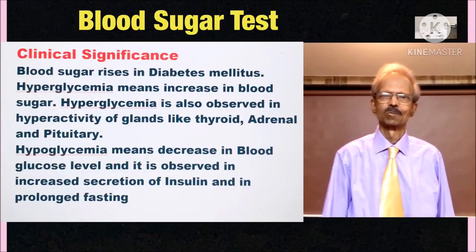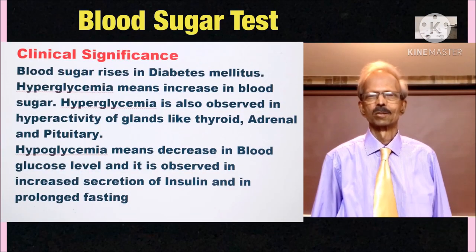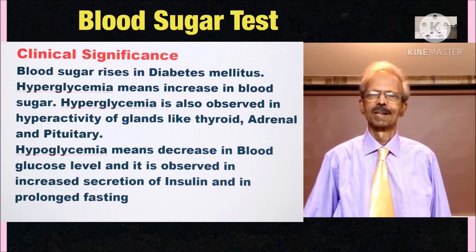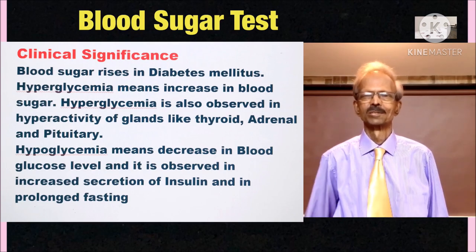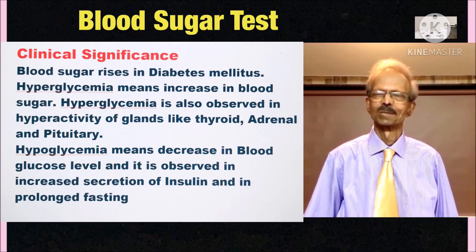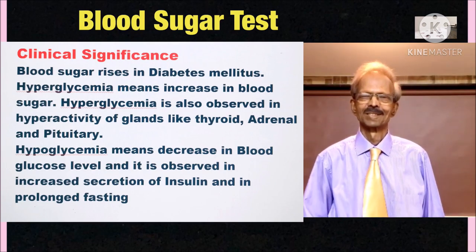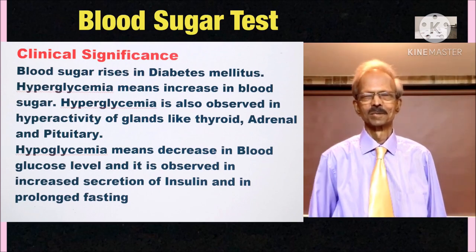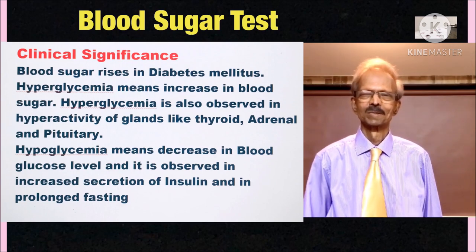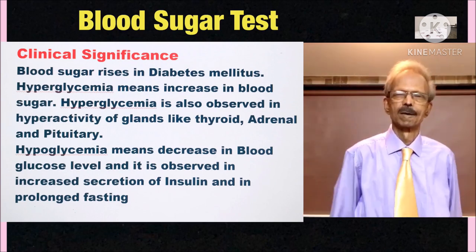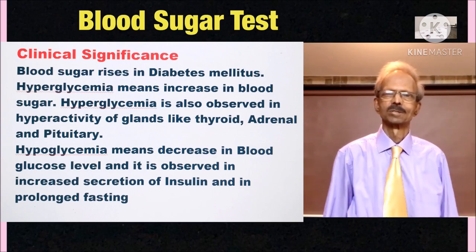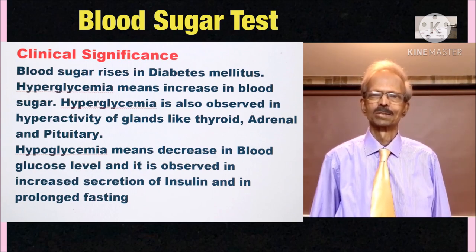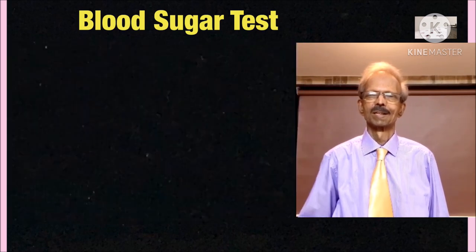Blood sugar means blood glucose. Blood sugar rises mainly in diabetes mellitus, and hyperglycemia means increase in blood sugar. Moderate hyperglycemia is also observed in hyperactivity of glands like thyroid, adrenal, and pituitary. Hypoglycemia means decrease in blood glucose level, and it is observed in increased secretion of insulin and in prolonged fasting.